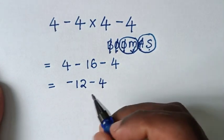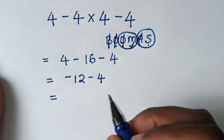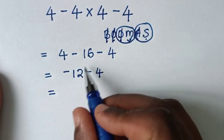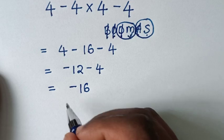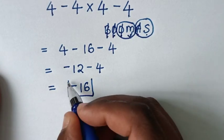Now we are left with this subtraction. So it will be equal to negative 12 minus 4, which is negative 16. Therefore this is our final answer.